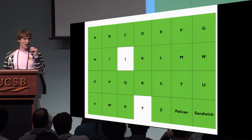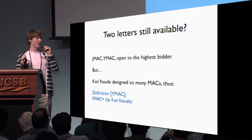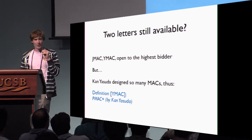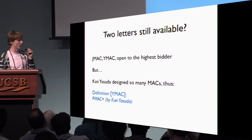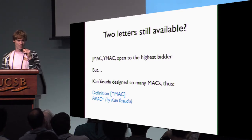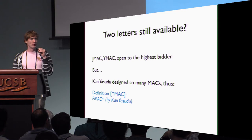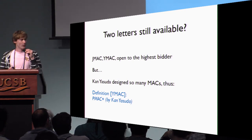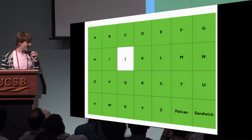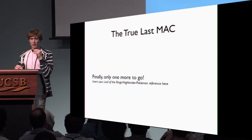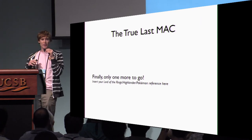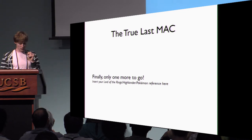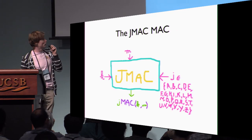So it seems that the only two possible MACs that can be designed until the end of crypto are JMAC and YMAC. But it's not as simple, because it's well known that Yasuda designed and analyzed many MAC algorithms. So we feel obliged to define YMAC as PMAC+ by himself. So only J remains. Now at this point in my presentation, I'm really hoping that no one in the room is going to yell that they in fact designed JMAC 10 years ago, but barring that, with Bart, we're going to propose this JMAC.